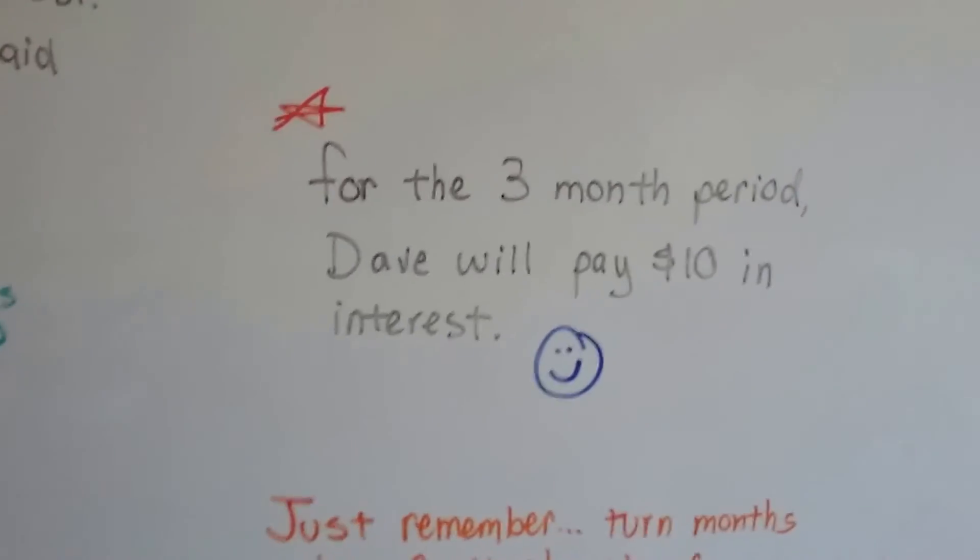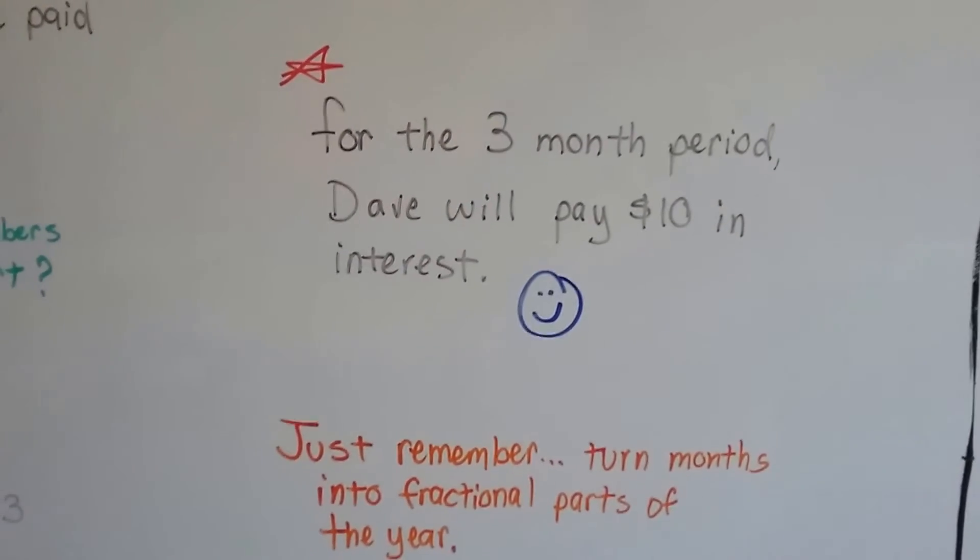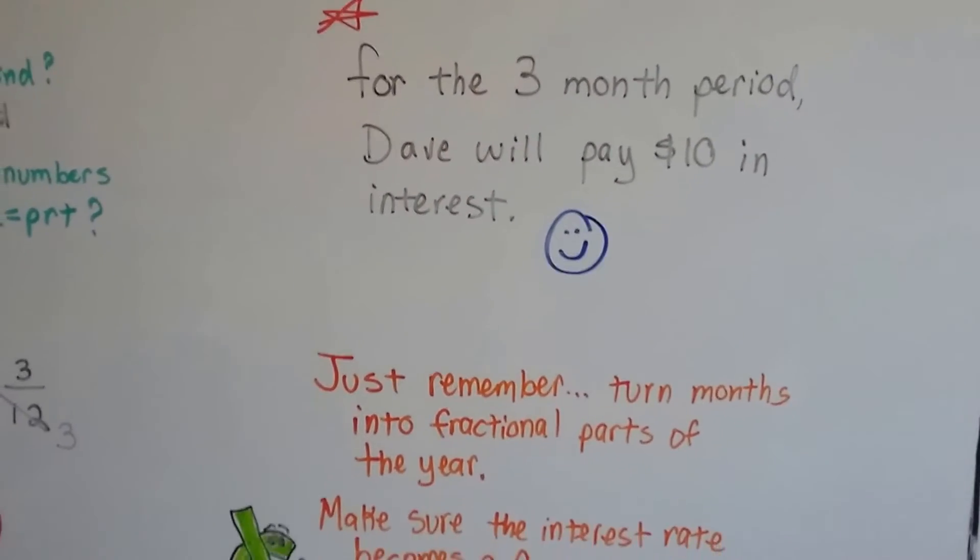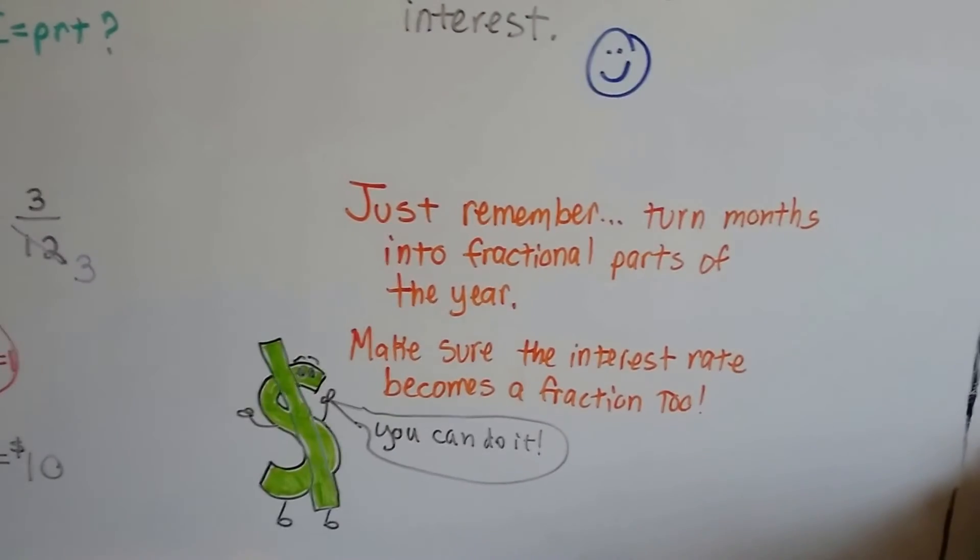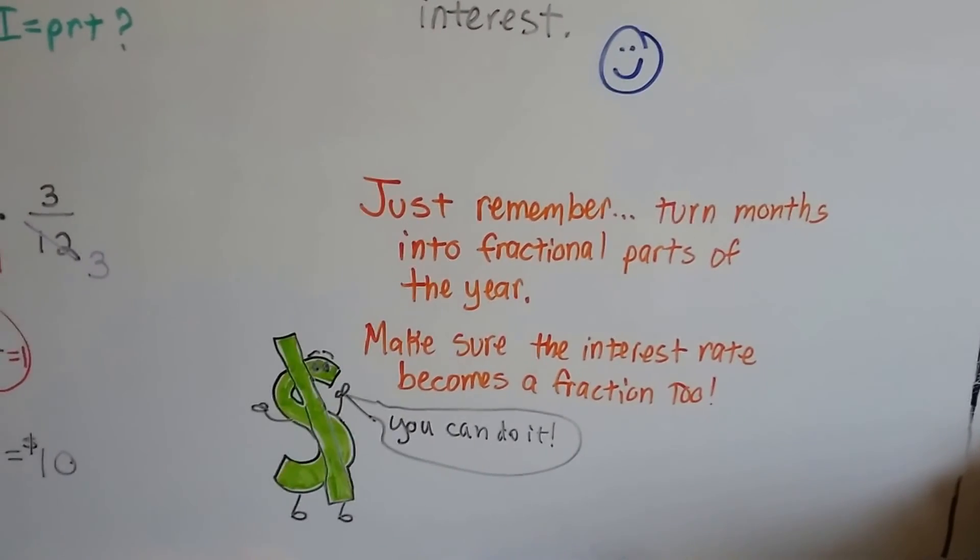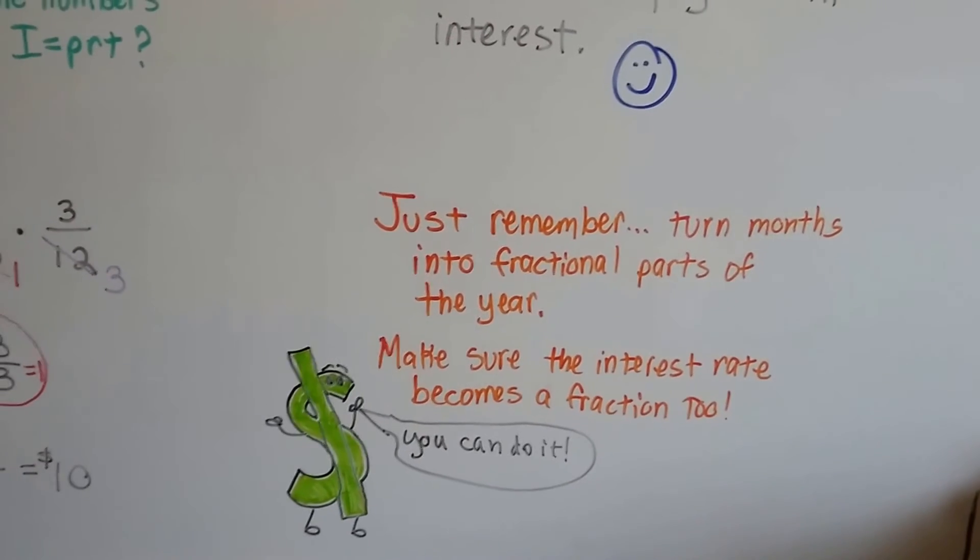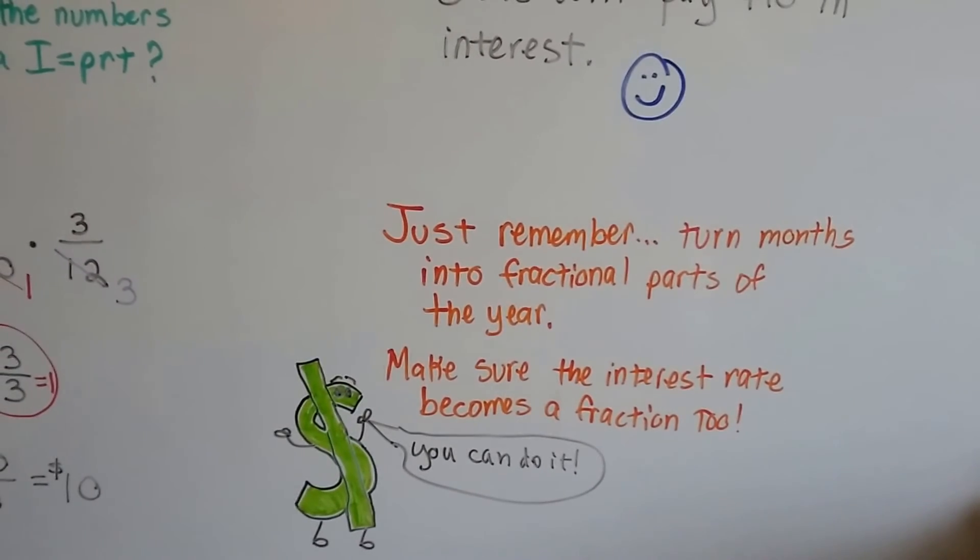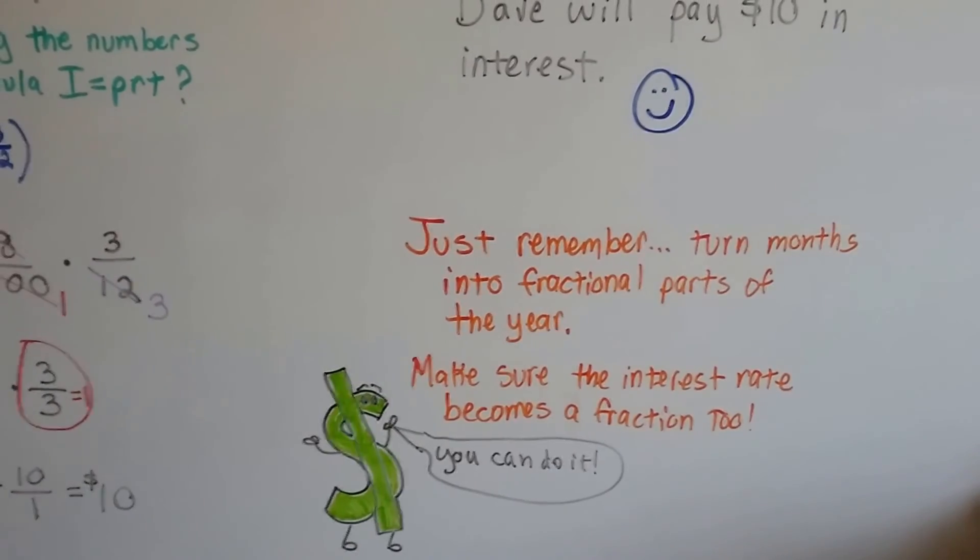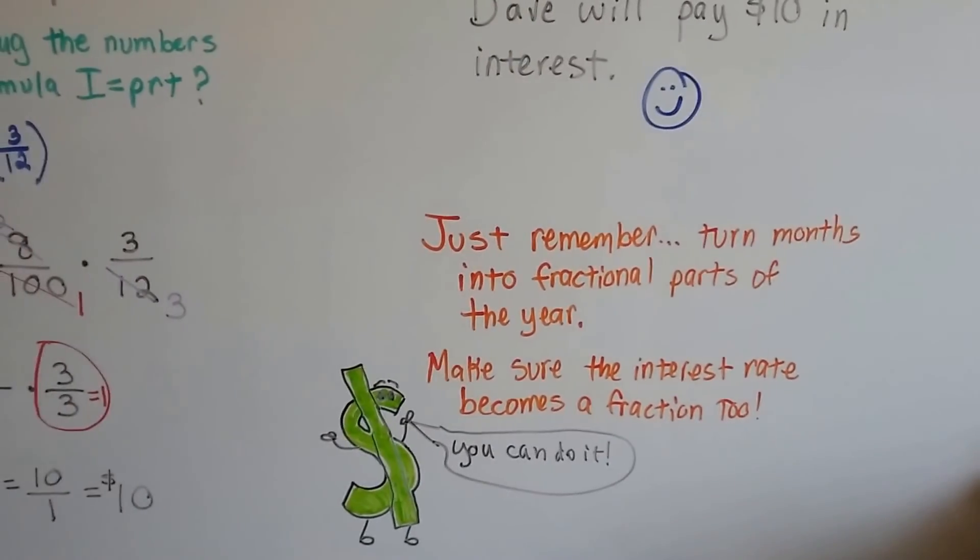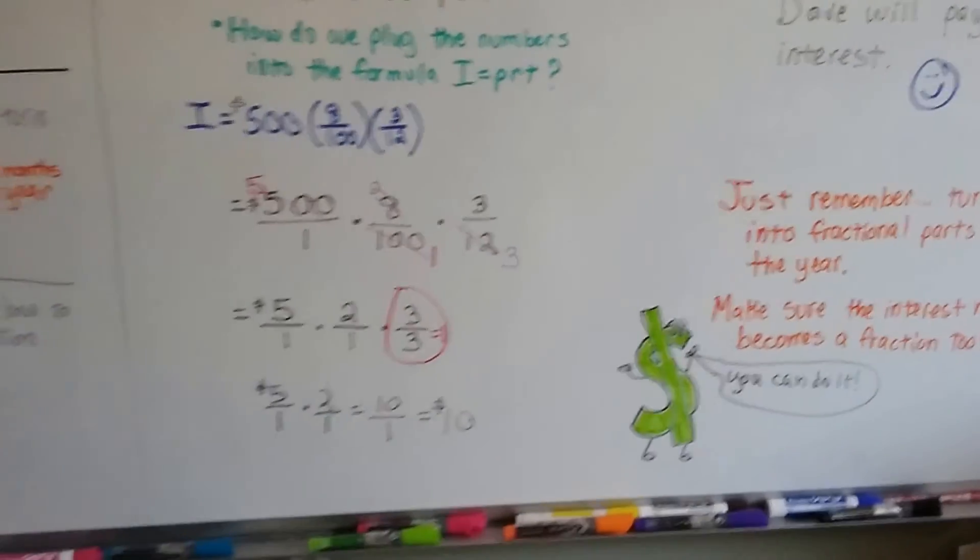That wasn't hard, was it? Just remember to turn the months into fractional parts of the year and make sure the interest rate becomes a fraction too. You can't multiply a percentage or a decimal by a fraction - they need to be the same. Decimal decimal, fraction fraction. So the percentage becomes eight one hundredths or whatever your percentage is as a fraction.